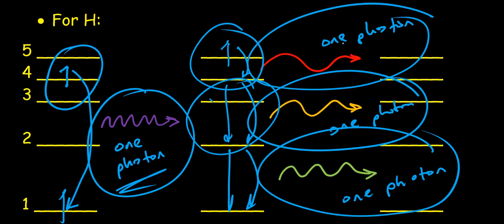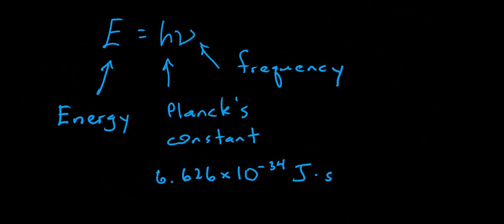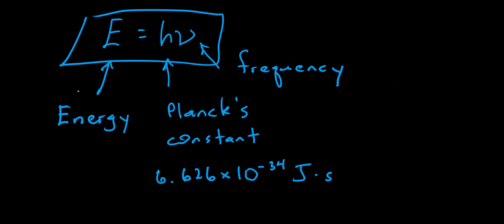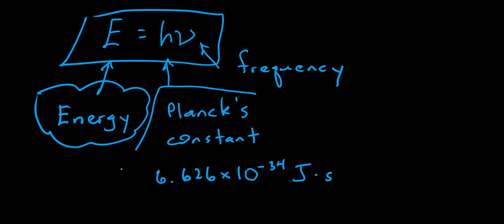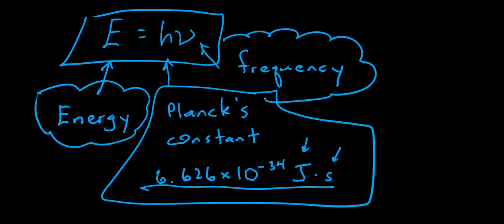So the first scenario gives one photon of high-energy violet light. The other gives three photons total — a red, orange, and green photon — for the total energy release jumping from level 5 back down to level 1. In the equation E = hν, E stands for the energy in a single photon of light from one electron making one jump. H is Planck's constant: 6.626 × 10⁻³⁴ joule·seconds. And ν — the squiggly-looking V — is the frequency of the light being released.